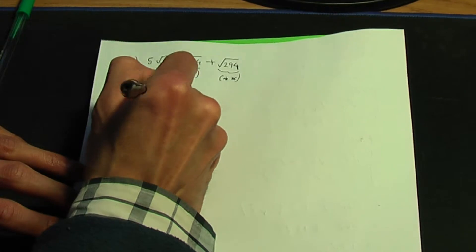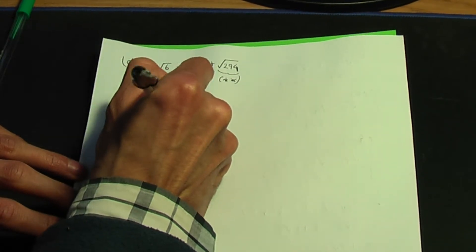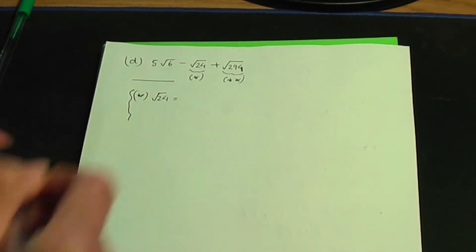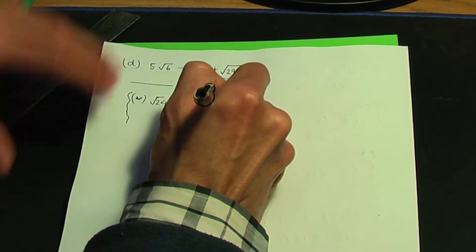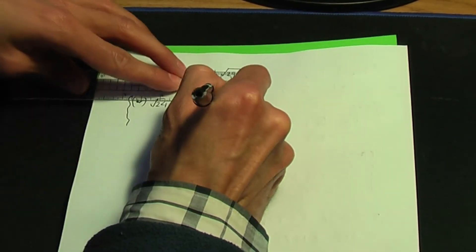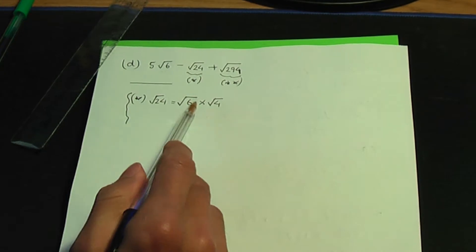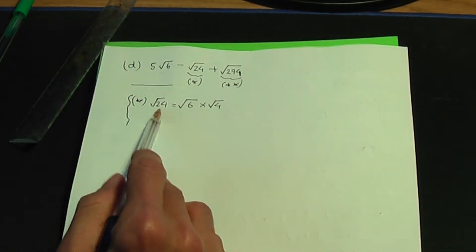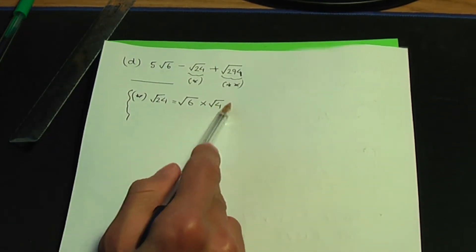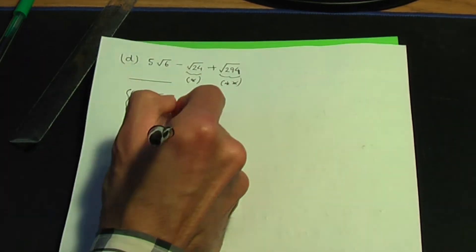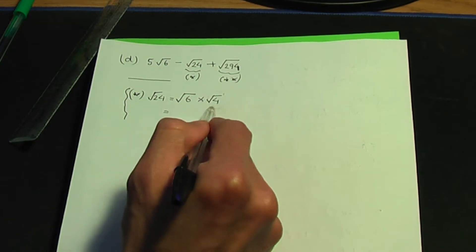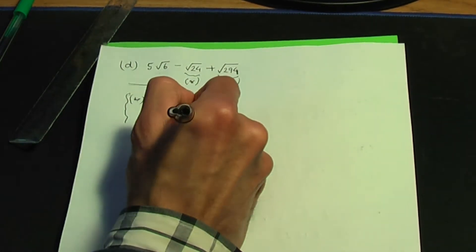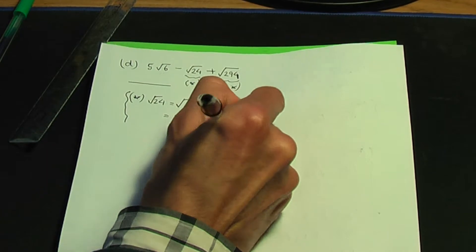For root 24 (star): root 24 equals root 6 times root 4, since 6 times 4 gives 24, and root 4 gives a whole number of 2. So root 24 equals 2 root 6.